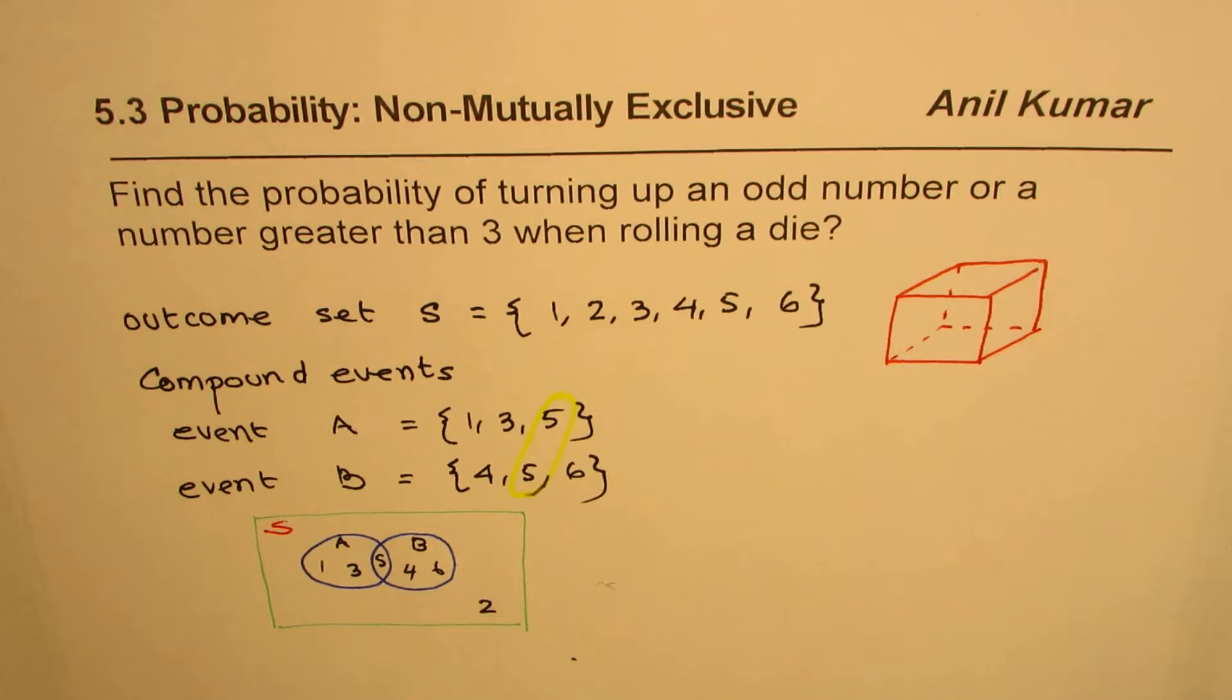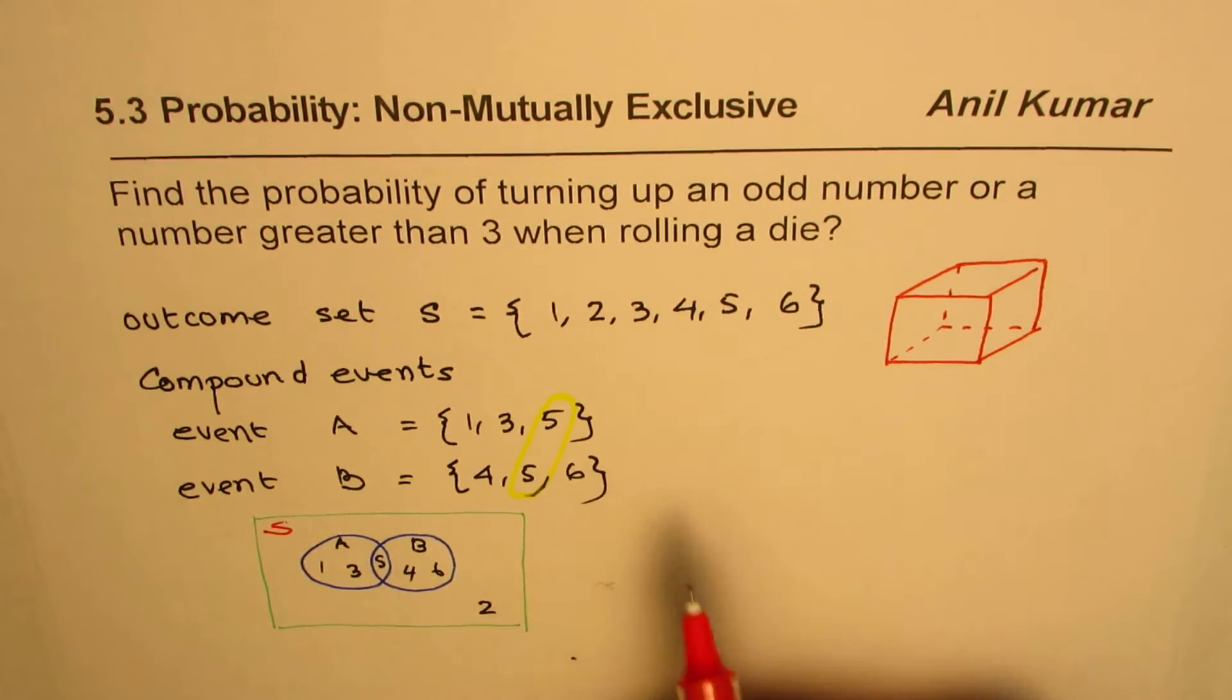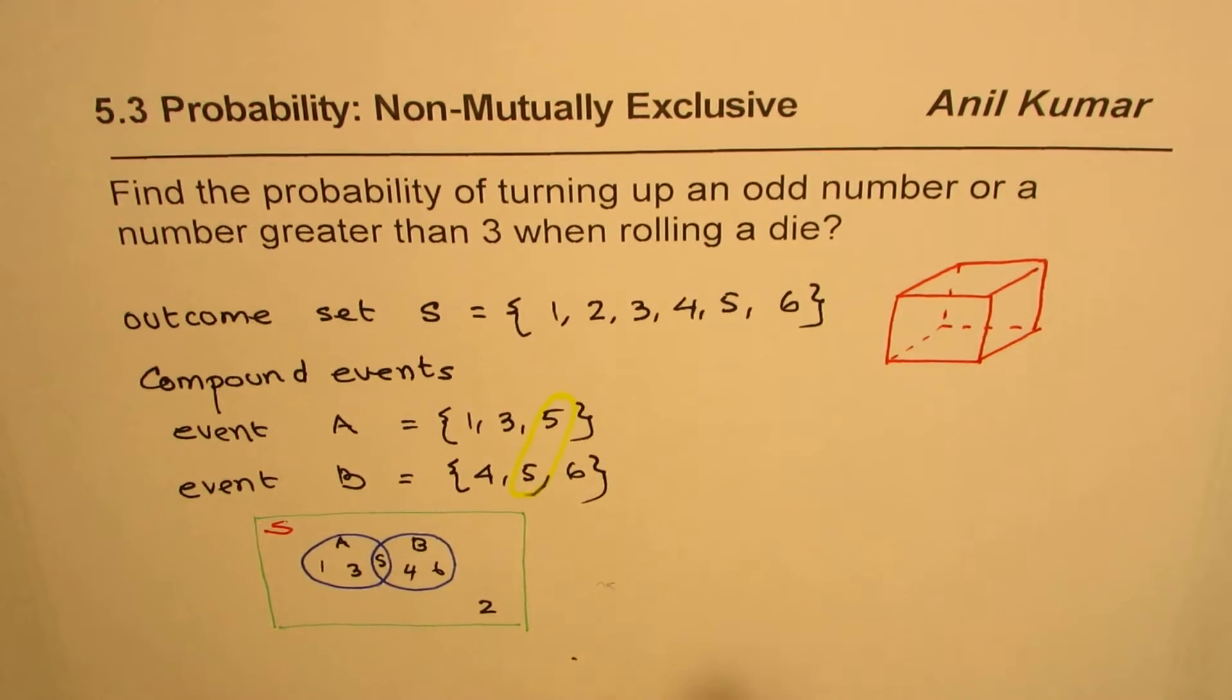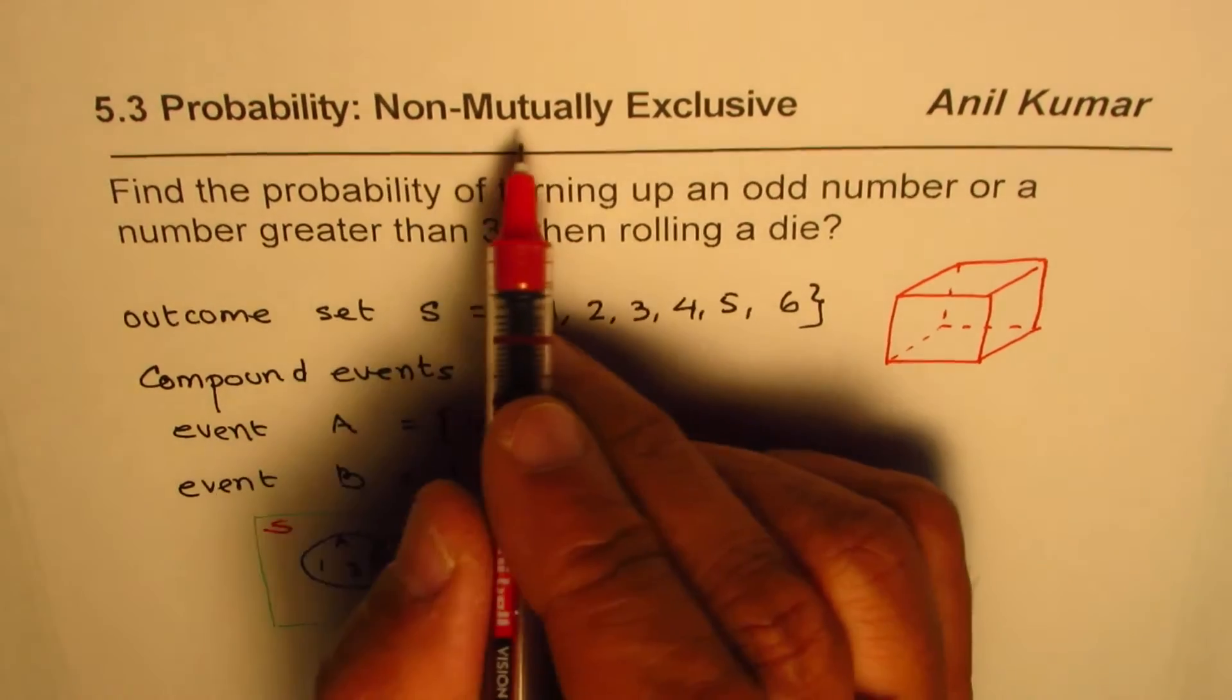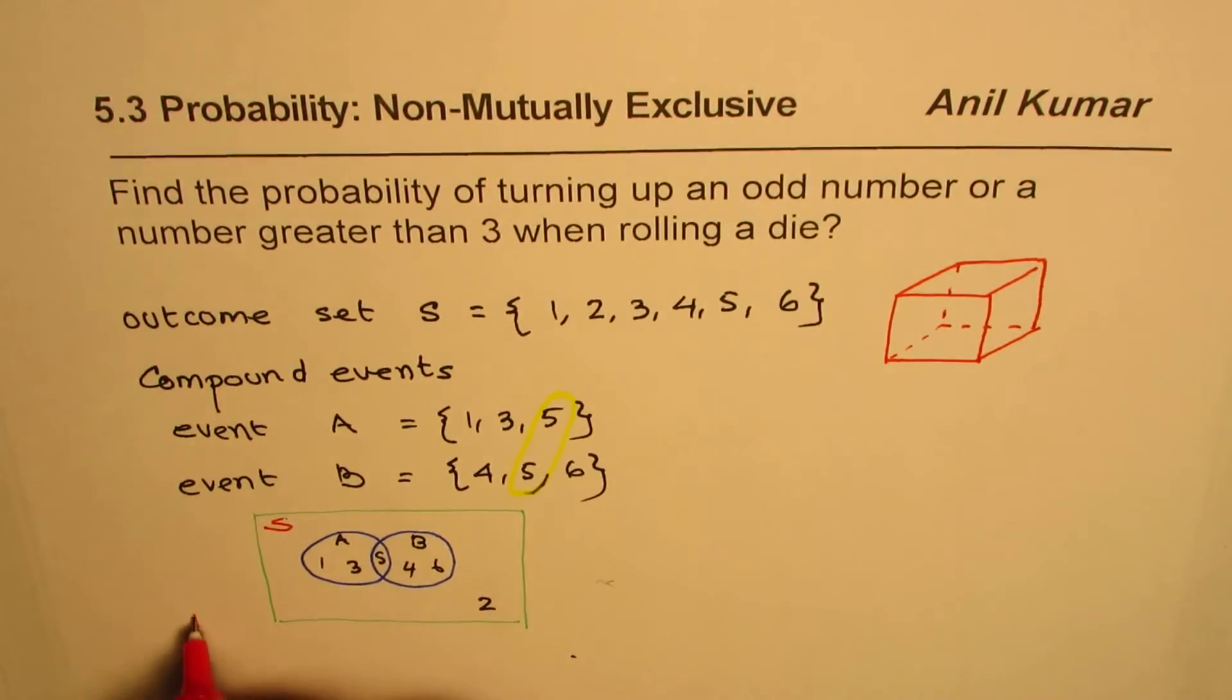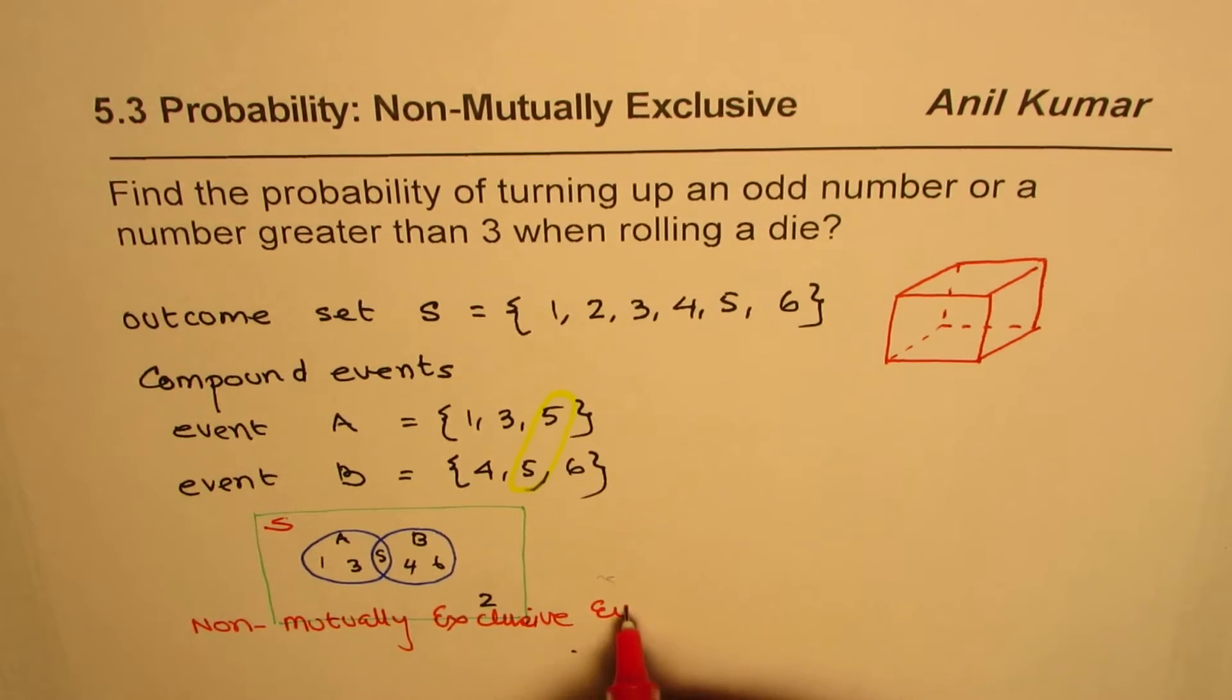So that is how our elements are placed in the sample set. Now, the question here is how to find probability of this compound event. Now clearly, since there is an overlap, this is a case of non-mutually exclusive event, right?